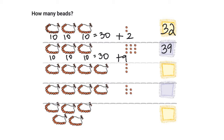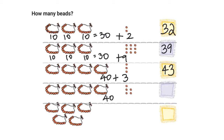In the next example, I have four necklaces, with each necklace having ten beads. So I have forty beads plus one, two, three — forty plus three gives me the number forty-three.